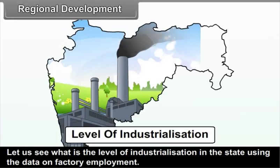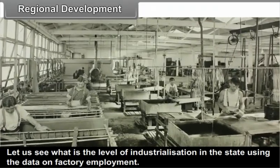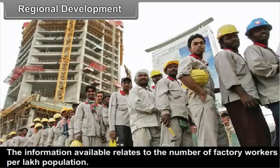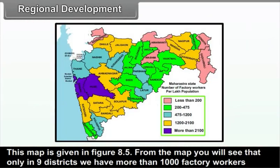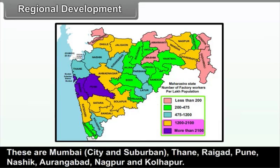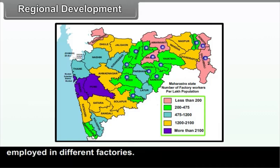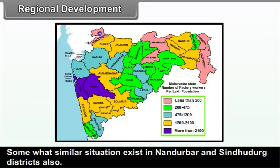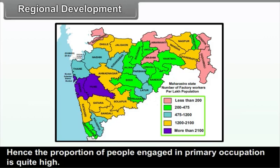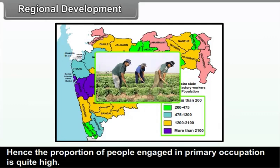Using data on factory employment — the number of factory workers per lakh population — we can assess the level of industrialization in the state. As shown in figure 8.5, only 9 districts have more than 1,000 factory workers per lakh population: Mumbai City and Suburban, Thane, Raigad, Pune, Nashik, Aurangabad, Nagpur and Kolhapur. Certain districts in central and eastern Maharashtra have less than 500 persons per lakh employed in factories, and a similar situation exists in Nandurbar and Sindhudurg districts, where the proportion of people in primary occupations is quite high.